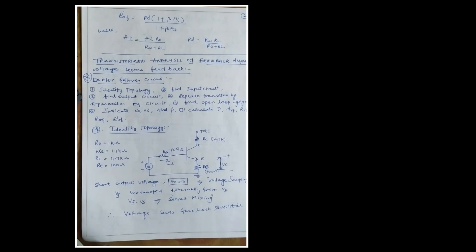Step one: identify the topology. From the given circuit, Rs = 1 kΩ, hie = 1.1 kΩ, Rc = 4.7 kΩ, Re = 100 Ω. When you short circuit V_out, V_naught equals zero — that is voltage sampling. Since V_f is subtracted externally from Vs, that is series mixing. So this network is a voltage series feedback amplifier.